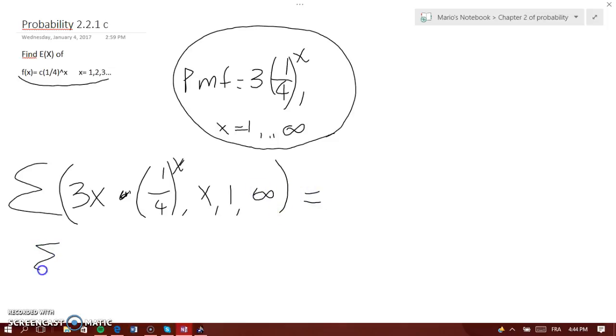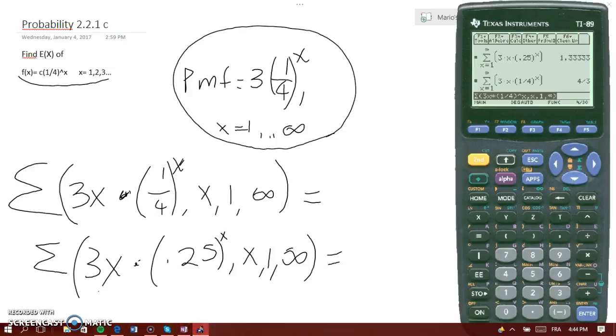And if you want it to be in decimal, you write 3x times .25x, comma x, comma 1, comma infinity. And let's use, let's see what it says here. I'm going to do that.